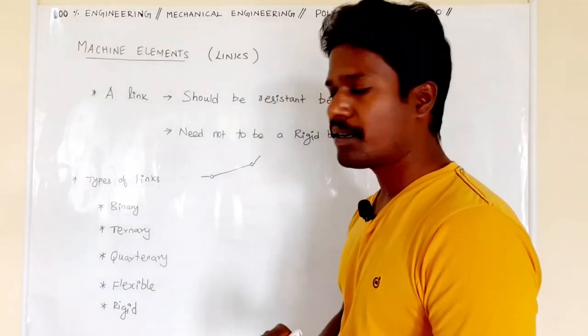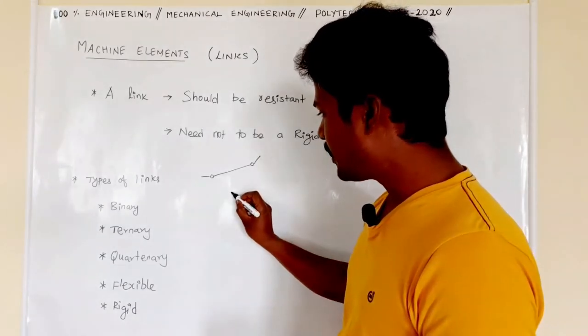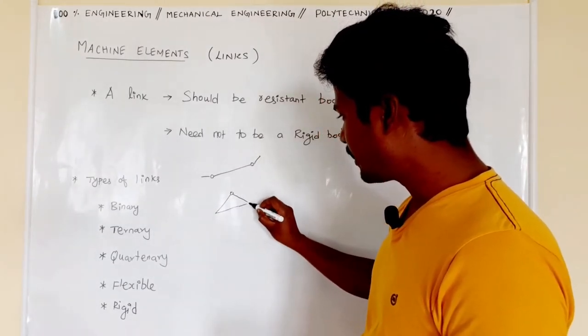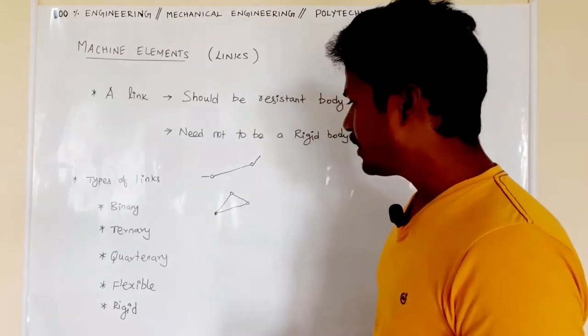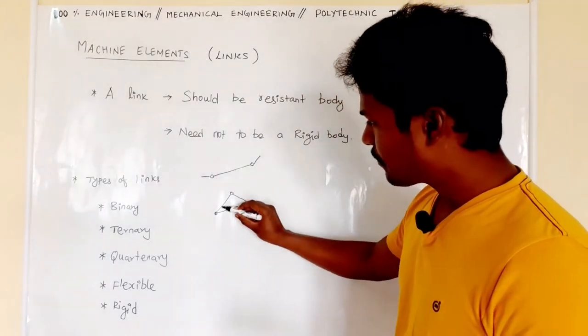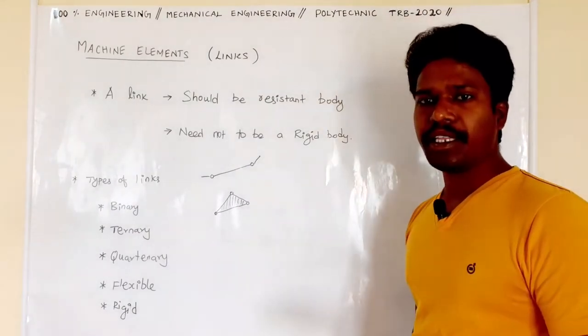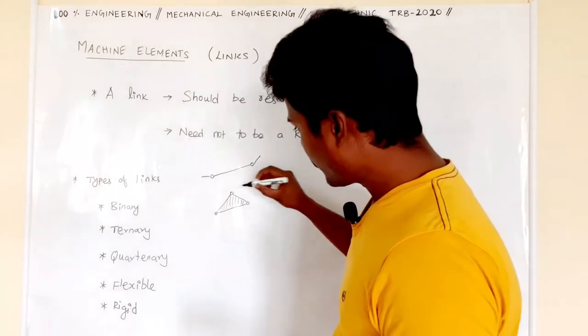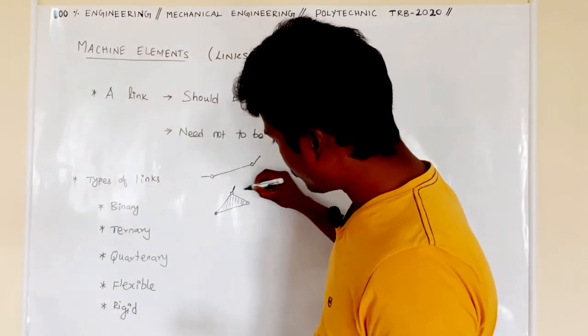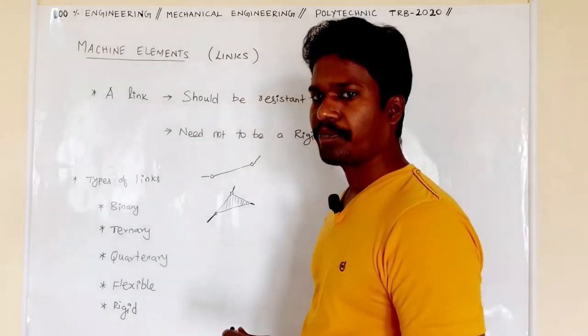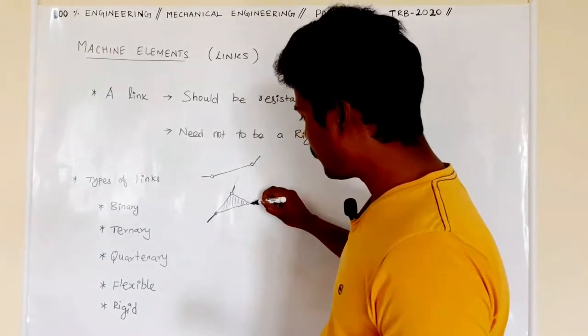Next, what is a ternary link? Ternary link is nothing but this type of link. If you look at this link, here we can join one machine element, and here one machine element, and at this end also a link.